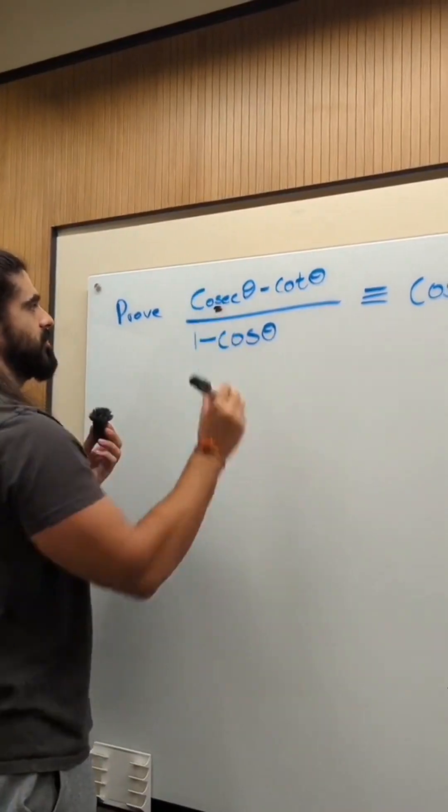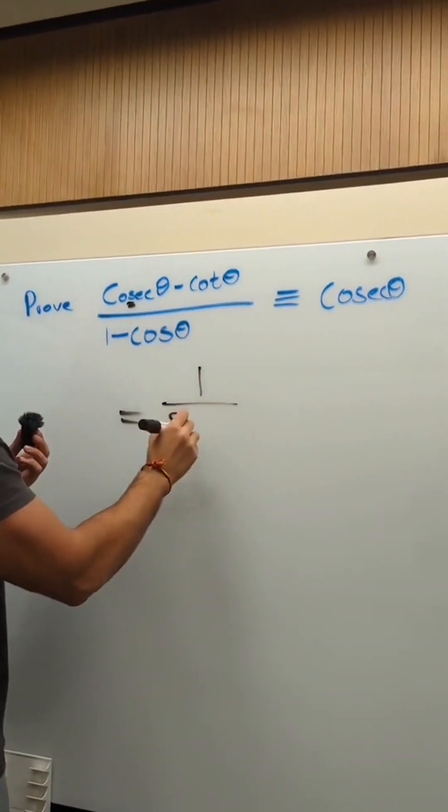Cosec, you look at the third letter, 1 over sine theta.